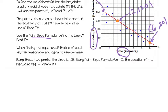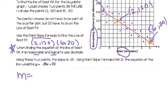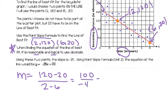When finding the equation of the line of best fit, it is reasonable and logical to use decimals — that's something new. So the first thing I'm going to do is find my slope. My two ordered pairs are (2, 120) and (6, 20). I do y minus y: 120 minus 20 over 2 minus 6, which is 100 over negative 4, equaling negative 25. My slope is negative 25 — no decimals needed, it comes out nice and pretty.